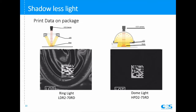Let's see one example to understand why we need shadowless light. The left side uses a typical bright field ring light — the high angle direct ring light LDR. With bright field, we get direct reflection on all flat areas, but where there's a wrinkle it shows dark — creating a lot of noise that makes it difficult to inspect the data code stably. So in this application we use a shadowless light. Because the light comes from all different angles, we can remove the surface texture and unevenness and get a very good image.